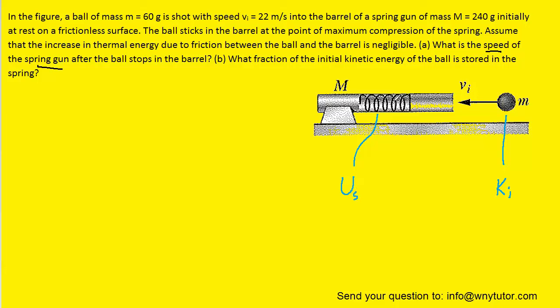But at the same time the ball and spring gun are moving backwards. Remember in part A we had determined the speed of the spring gun and ball after the collision, so there still is movement and therefore there still is final kinetic energy.